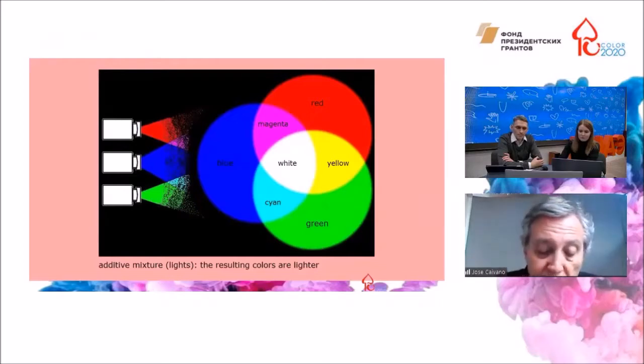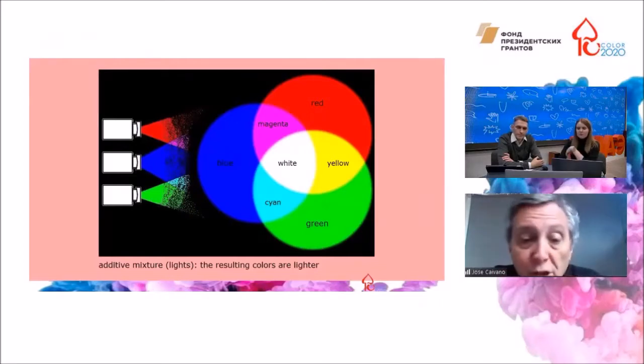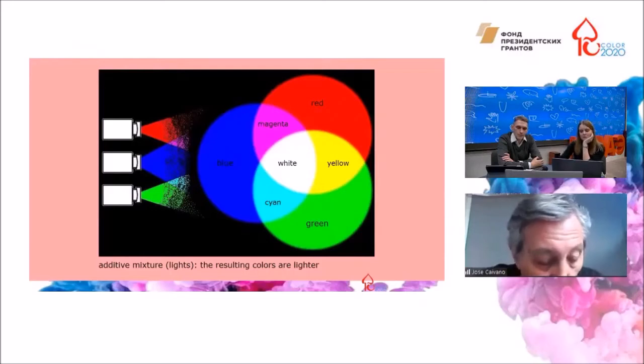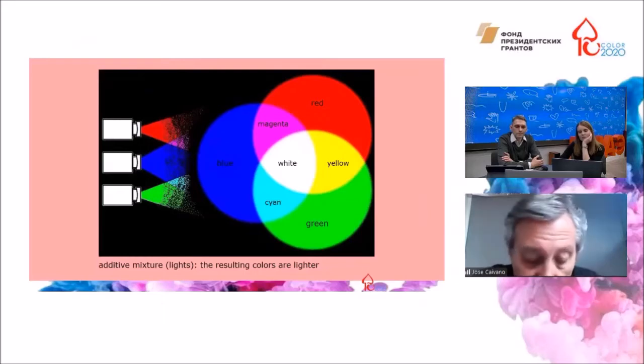For example, in the additive mixture of red, green, and blue, magenta is lighter than blue and red, yellow is lighter than red and green, cyan is lighter than green and blue, and finally white is lighter than all of them.